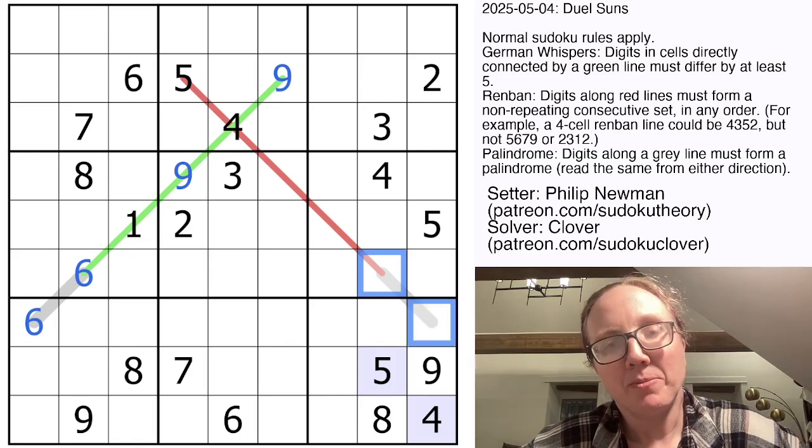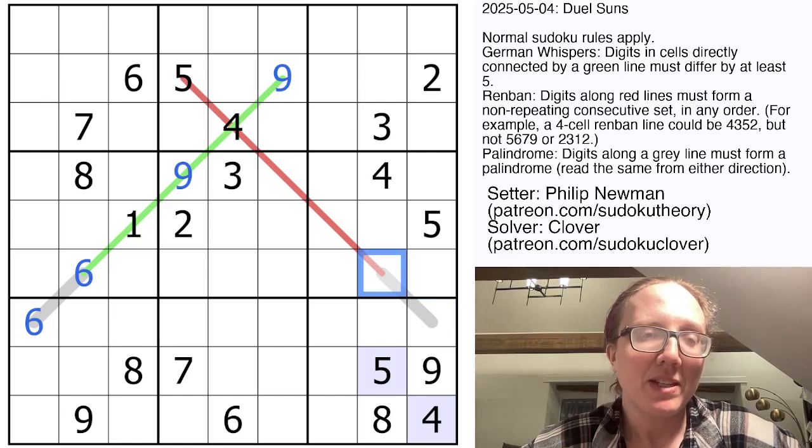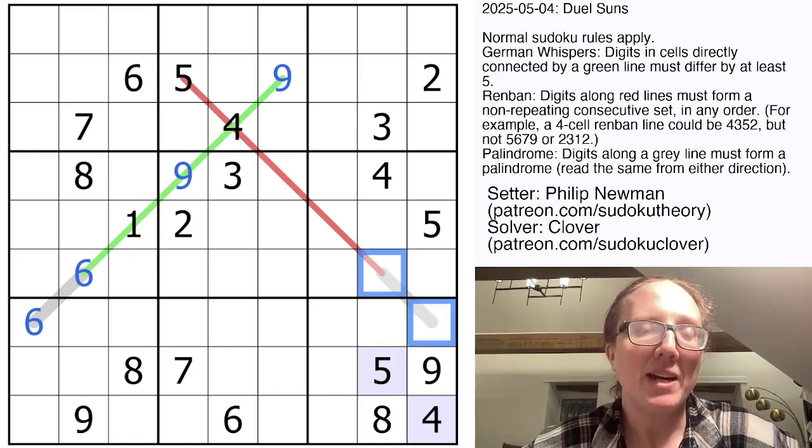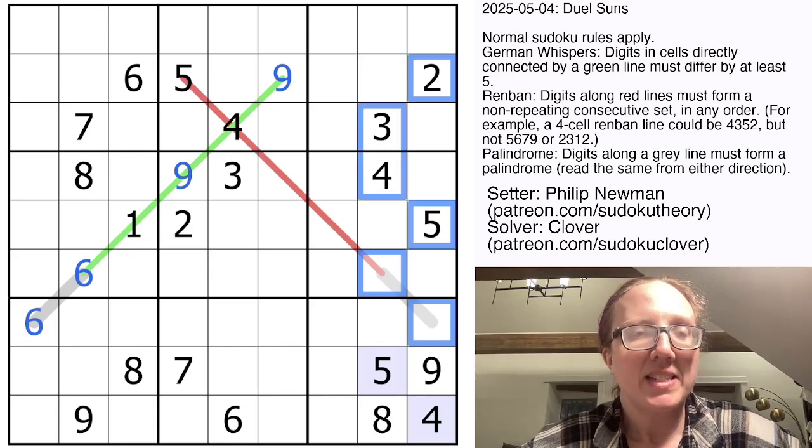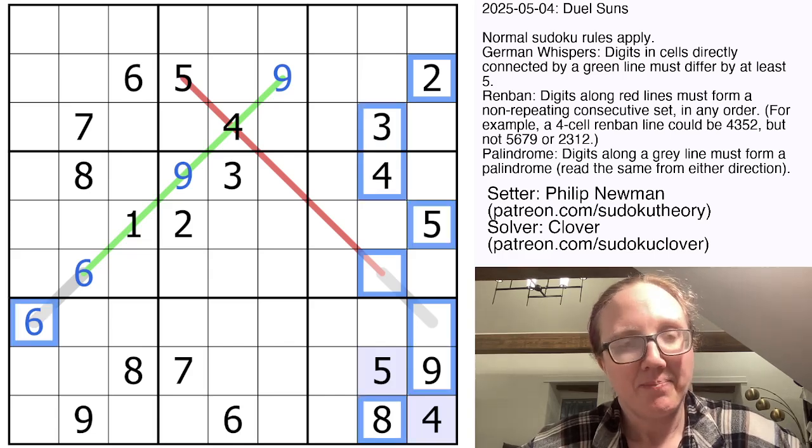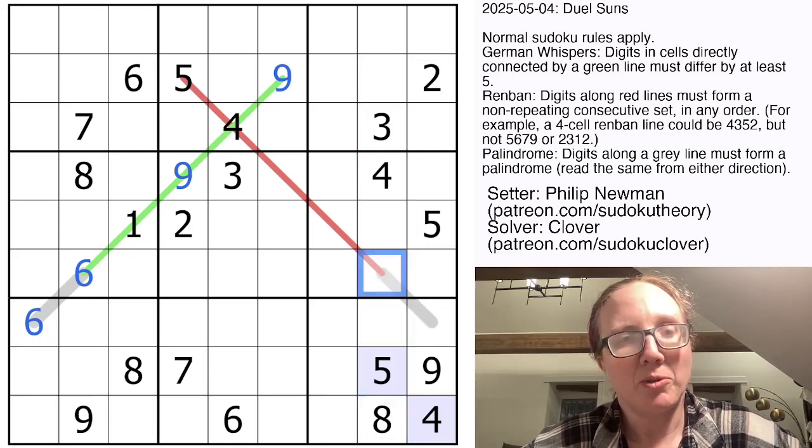Now if we look at this palindrome, whatever digit can't be here also can't be here, and vice versa. So the digits that are ruled out are two, three, four, five, six, eight, and nine. So the only remaining possibilities are one and seven.